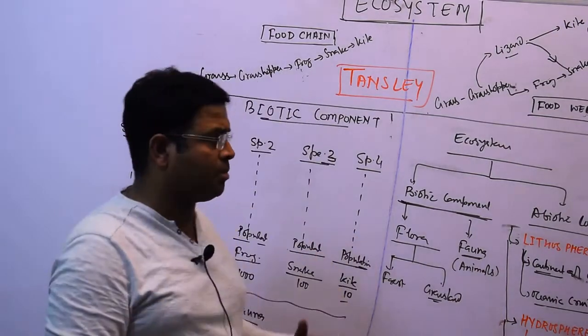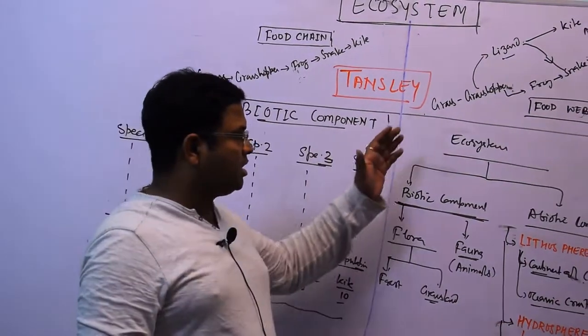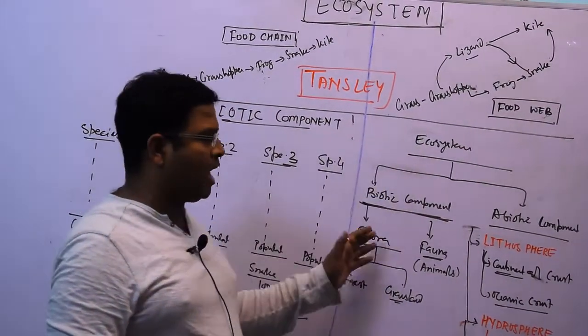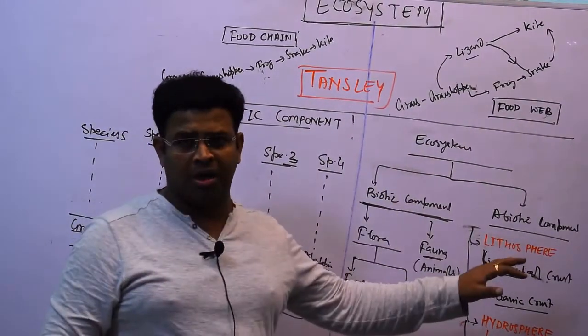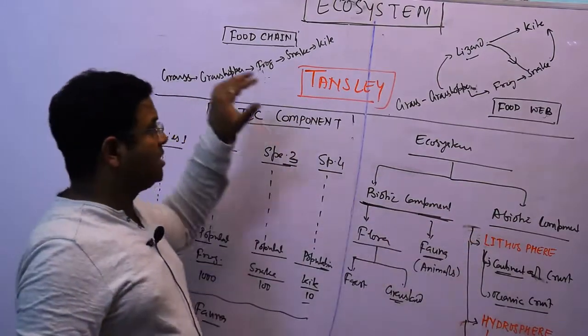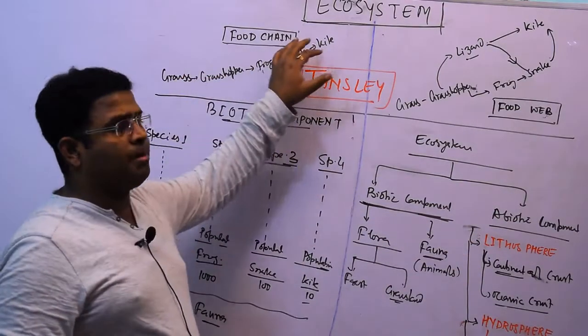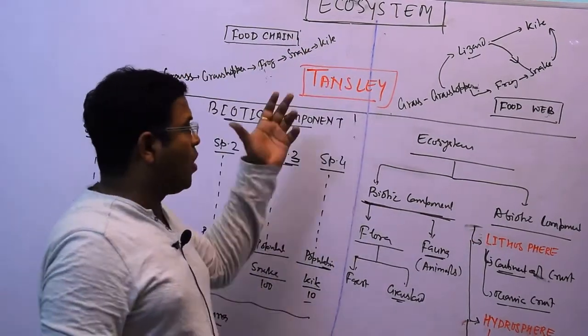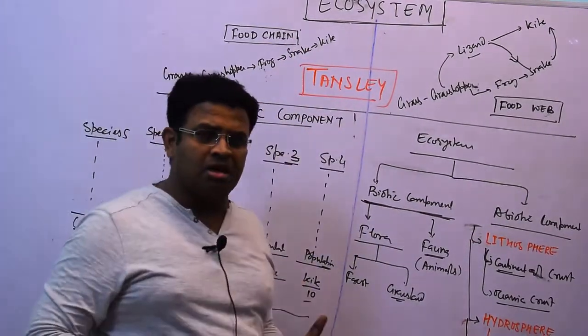So the definition of ecosystem is: it is an interaction between biotic and abiotic communities, as well as interaction within the biotic community. This term was given by Tansley.